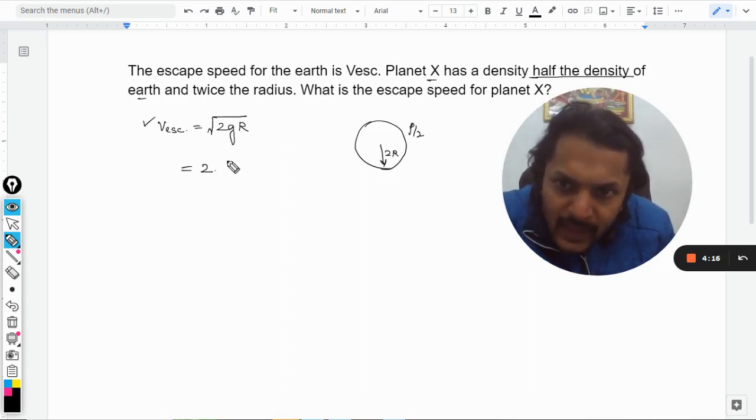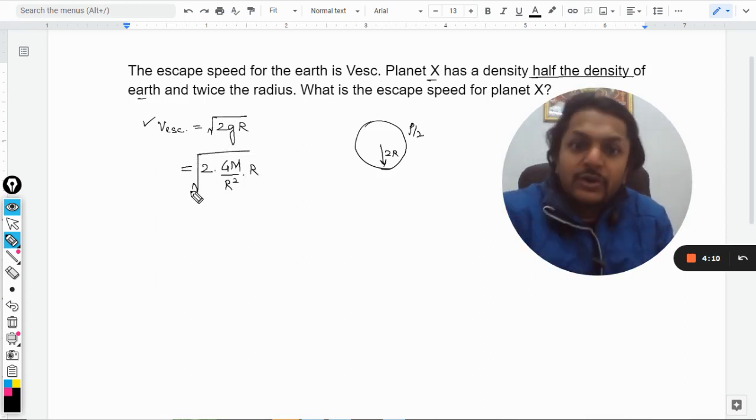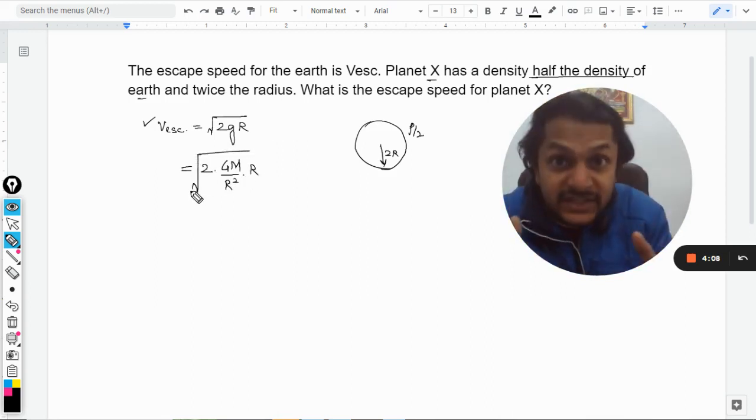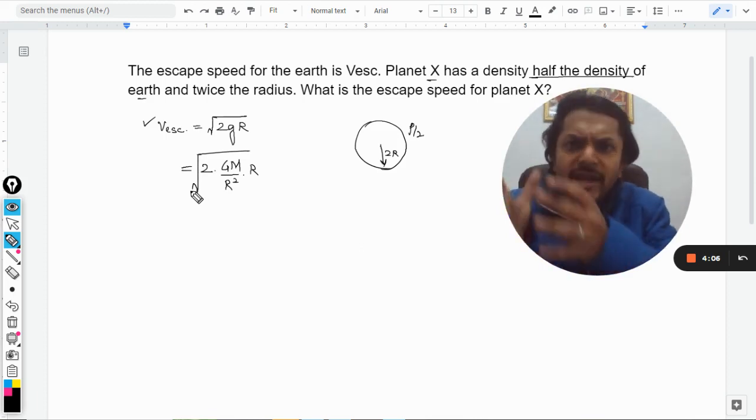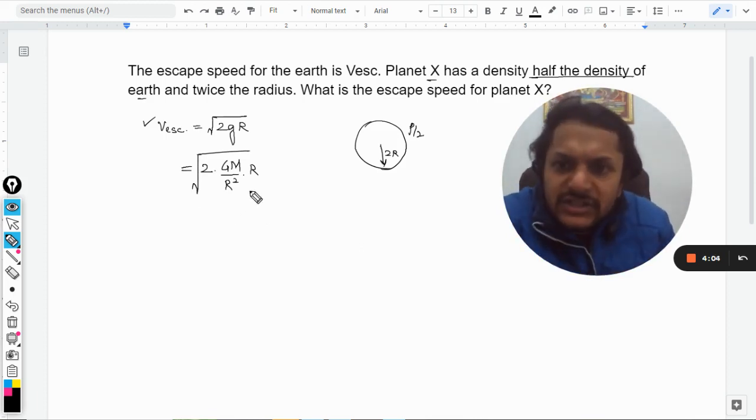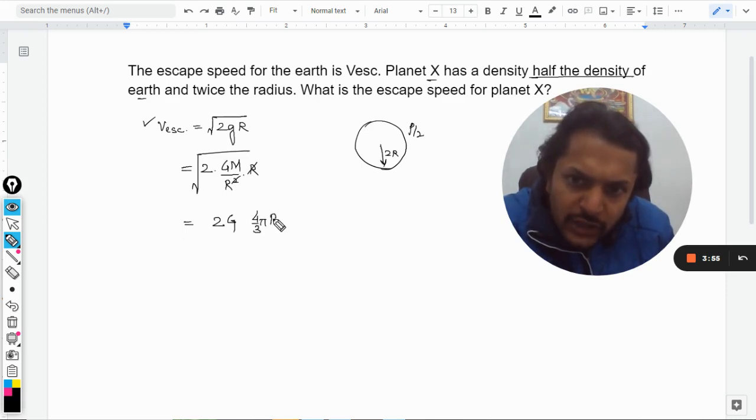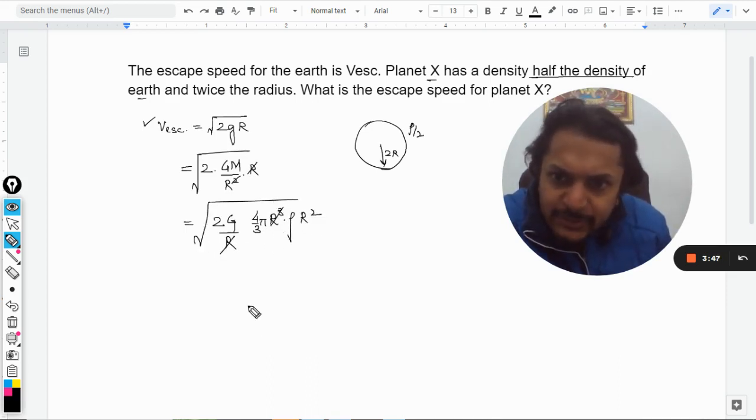And now I am just going to substitute this small g here as GM by r squared because I want to talk in the terms of density. That is why I have to get to the density somehow. And now 2gr and r gets cancelled and mass is now converted into volume of the sphere multiplied by density and there is one r in the denominator. Now this r and this r square gets cancelled.